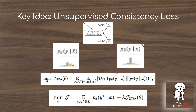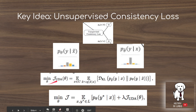The idea is you penalize this term, the KL divergence, which is a distance measure used to compare distributions. You minimize this KL divergence between the sample after it's been augmented and before it's been augmented. This makes up the unsupervised data augmentation loss, which is combined with the regular cross-entropy loss in this overall cost function for the model.